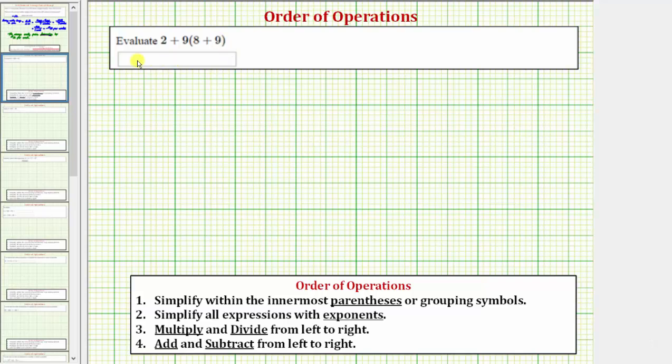We want to evaluate the given expression. To evaluate this expression correctly, we must follow the order of operations outlined below. So the given expression is two plus nine times the quantity eight plus nine.